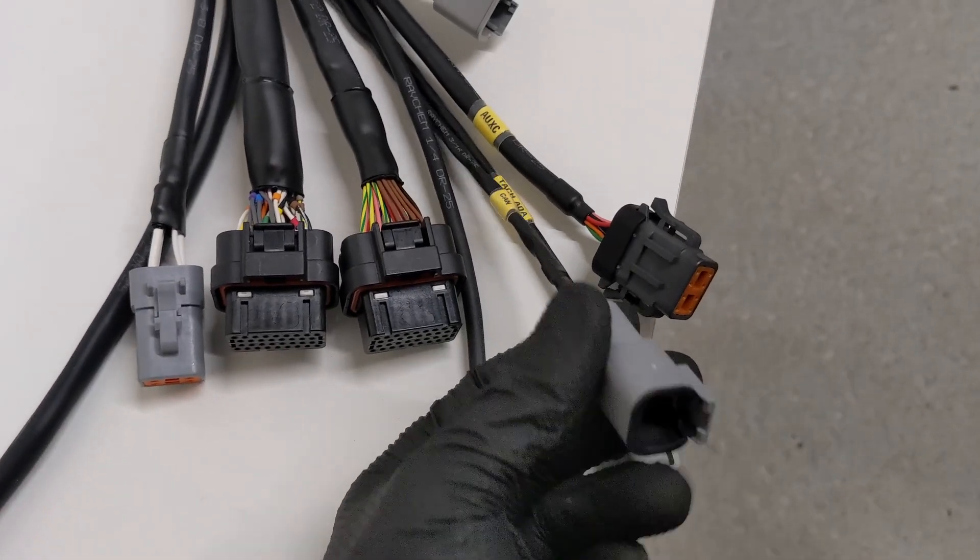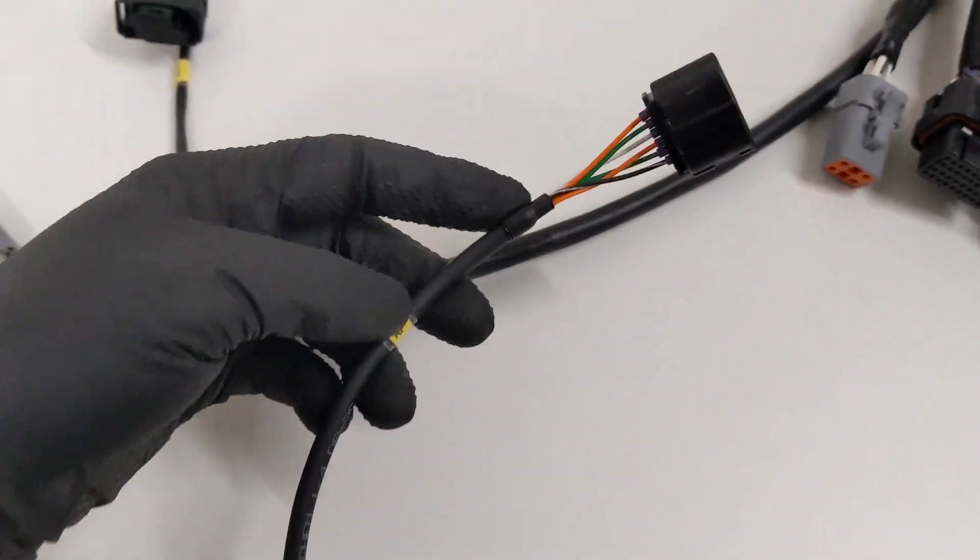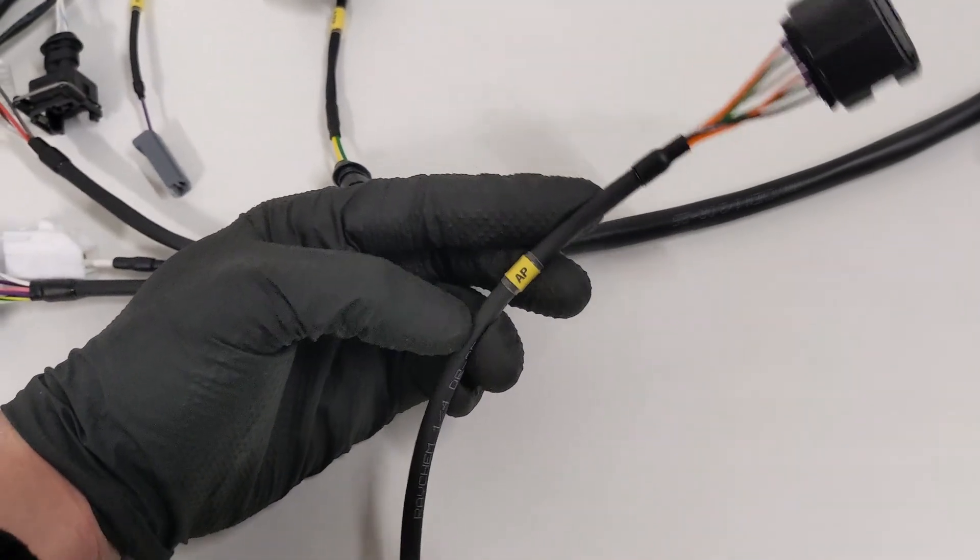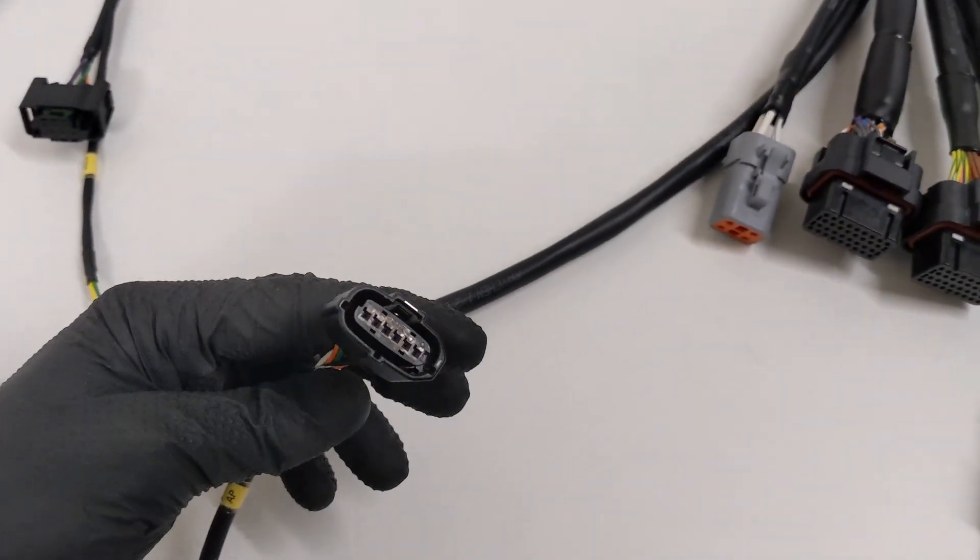On Haltech and Link we have a CAN plug. The customer is also using our drive-by-wire conversion kit, so we've got the accelerator pedal for the GT86 here.